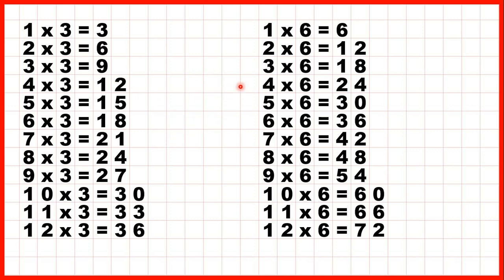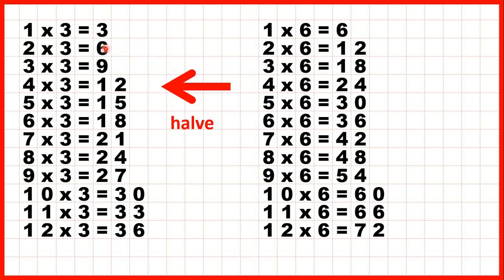Or looking at it the other way: if we halve what's in the 6 times table we get what's in the 3 times table. Remember we find half of a number by dividing it by 2. 6 divided by 2 is 3, 12 divided by 2 — or half of 12 — is 6, 18 divided by 2 — or half of 18 — is 9, and so on.